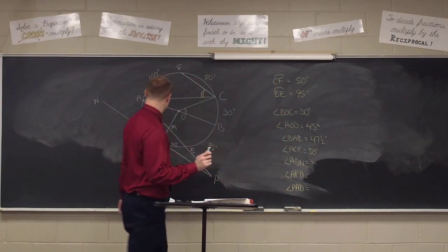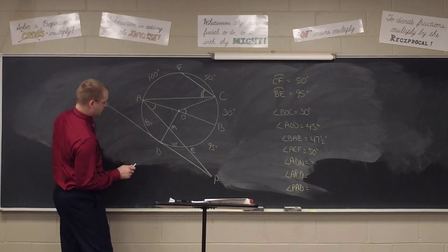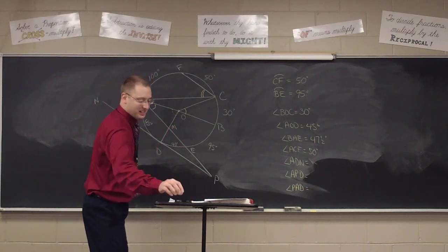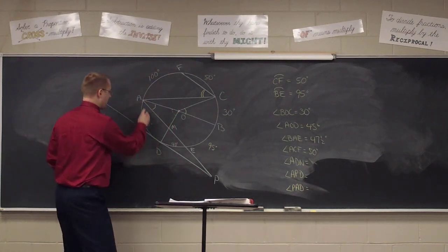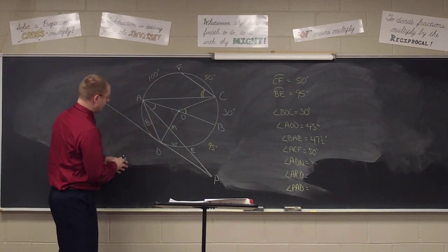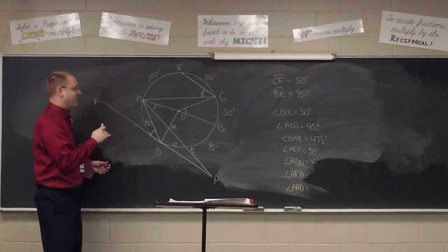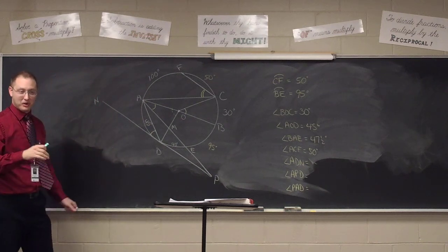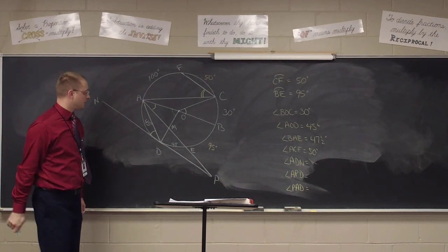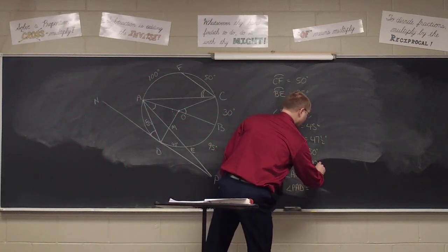Angle ACF — an inscribed angle, half its arc — 50 degrees. Angle ADN — formed by a tangent and a chord — half its arc — 22 and a half degrees. Angle APD — formed outside the circle, so it's half the difference, not half the sum. Subtracting 45 and 40 and taking half gives a very tiny angle. And angle PAD — another inscribed angle, equal to half the arc — 20 degrees.